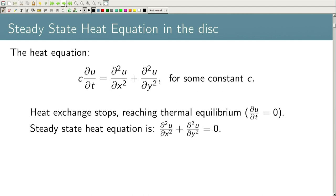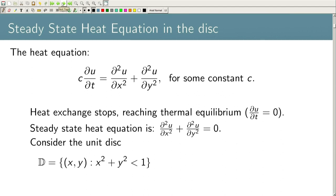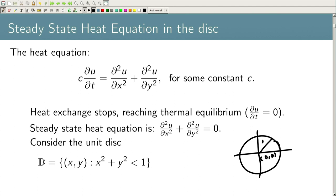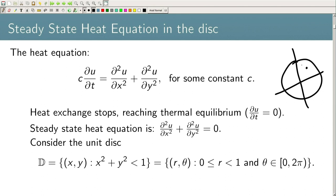If we look at the heat equation on the unit disk — centered at (0,0) with radius 1, i.e., {(x,y) : x²+y² ≤ 1} — we can write it in terms of polar coordinates. Any point in the unit disk can be represented by radius r and angle θ.